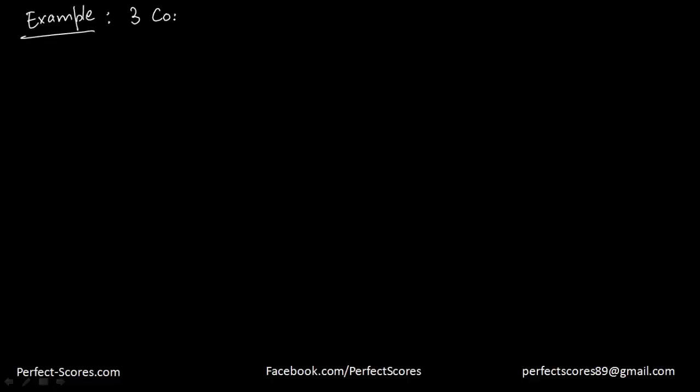How is conditional probability different from the normal probability that we have done till now? I'm going to start with a simple example. Let's say we are tossing three coins.